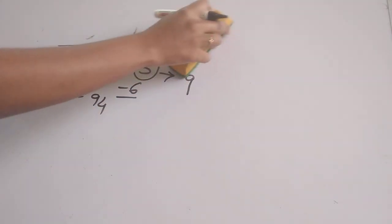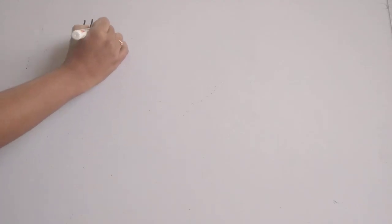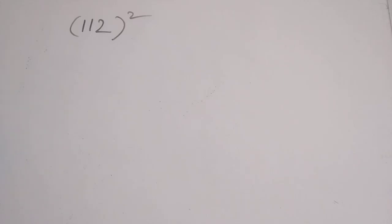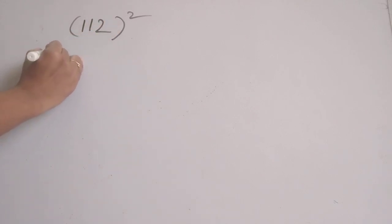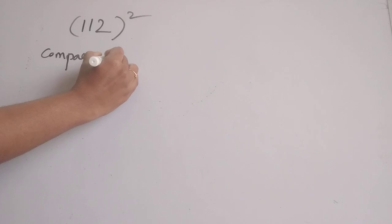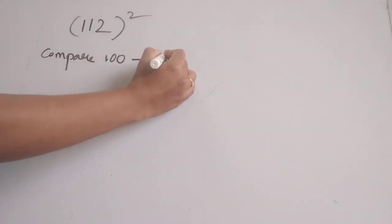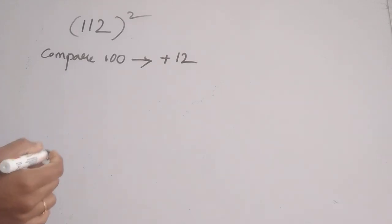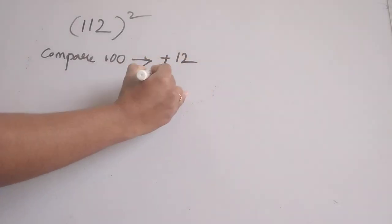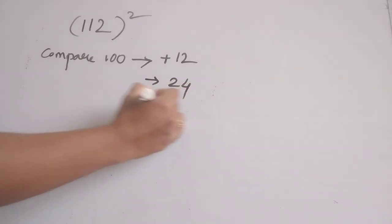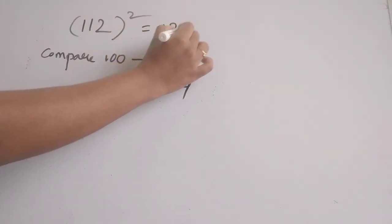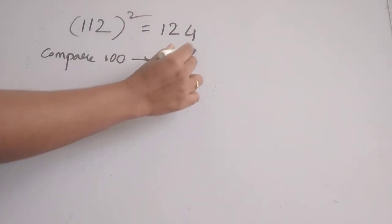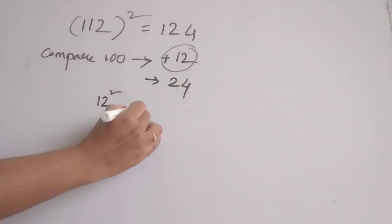Now let's take one more example: finding the square of 112. We compare with 100 — the difference is plus 12. We double 12 to get 24. We add 24 to 100 — that gives 124. After that, the square of 12 is 144.